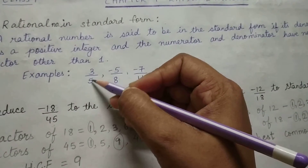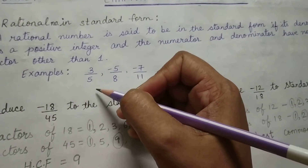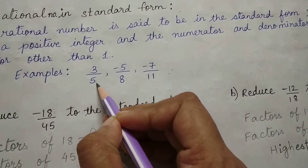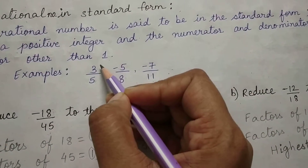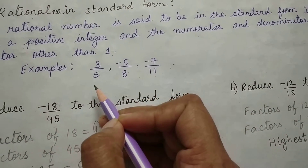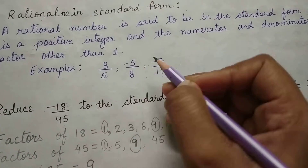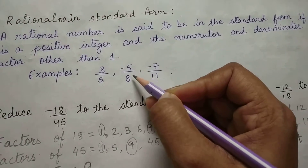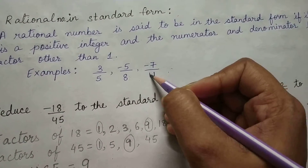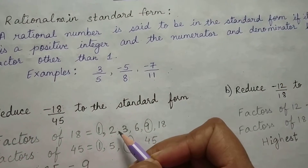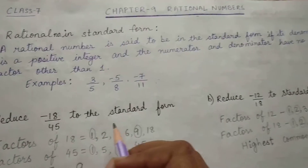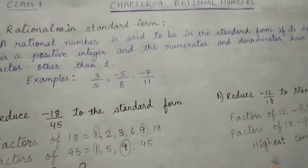The common factor between 3 and 5 is 1. The factors of 5 are 1 and 5, and the factors of 3 are 1 and 3, so the common factor is 1. Same way, 5 and 8, the common factor is 1. And 7 and 11, the common factor is 1. There should not be any other common factor other than 1.